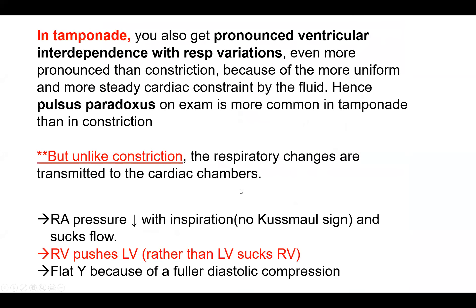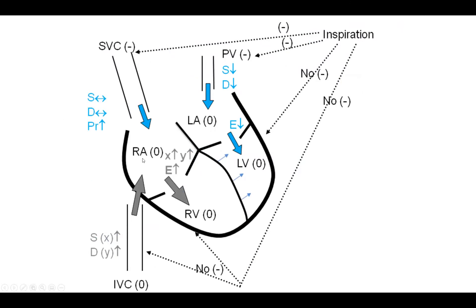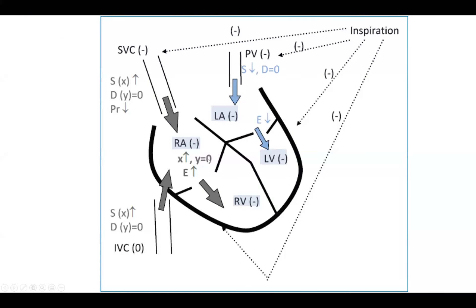There's a catch: the mechanism in tamponade is a little different. In tamponade, you don't have a stiff shell — you have fluid, which is constrictive but not a stiff shell. So respiratory pressure does get transmitted to the intracardiac chambers. The mechanism that works in tamponade: in inspiration, you get negative pressure on the right heart, which sucks flow from outside the chest. The right heart expands. The constrictive shell does not allow the RV to expand outward, so it pushes the LV — and you get that discordance. But the mechanism is different: it's more the RV sucking blood and pushing the LV.